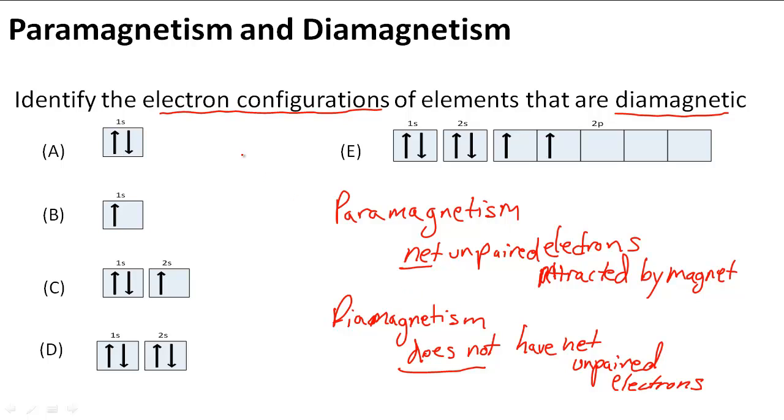We have to look at these answer choices and see which ones are diamagnetic. But if we also find ones that are paramagnetic, we know those are not the answer. A is a very obvious choice for diamagnetism because it has a paired electron group right here in the 1s energy level.